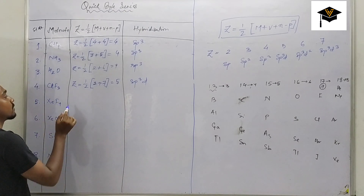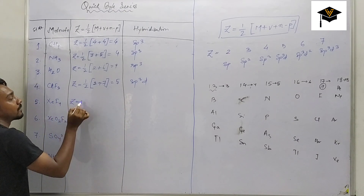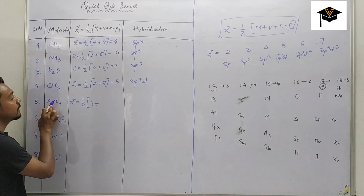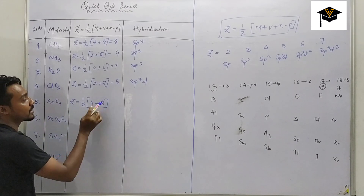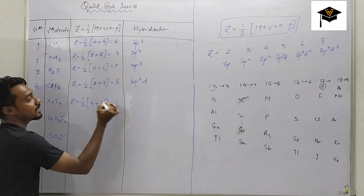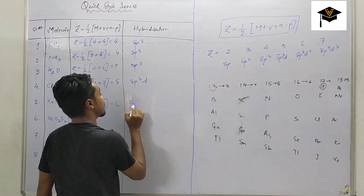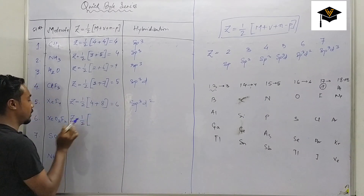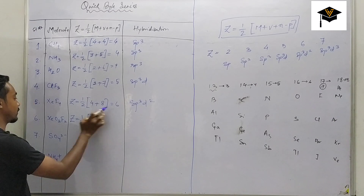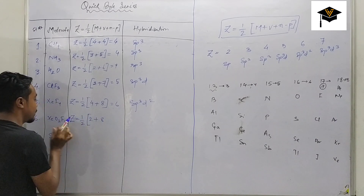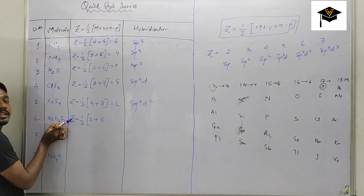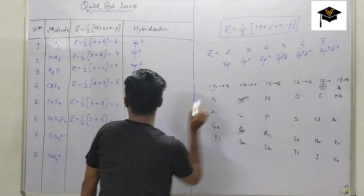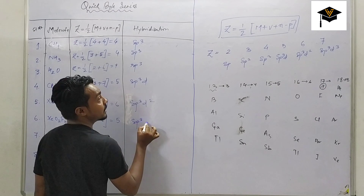For XeF4 (xenon tetrafluoride): Z = ½ × (4 + 8). Xenon belongs to group 18, so valence electrons = 8. Z = ½ × 12 = 6. Since Z = 6, the hybridization is sp³d². For XeOF2: Z = ½ × (2 + 8) — there are 2 monovalent atoms (fluorine); oxygen does not relate to hybridization here. Z = ½ × 10 = 5. Hybridization is sp³d.